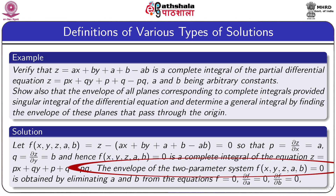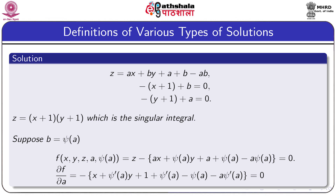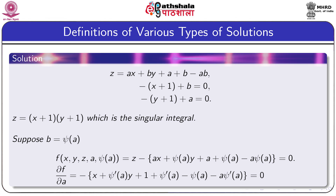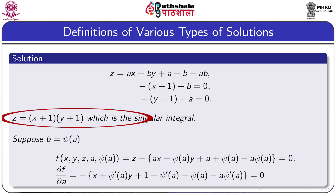The envelope of this two-parameter system gives the singular solution. To find it, we solve F = 0, ∂F/∂a = 0, and ∂F/∂b = 0 simultaneously. From the last two equations we obtain the values of a and b, and substituting into the first equation gives z = (x+1)(y+1), which is the singular solution of the given equation.